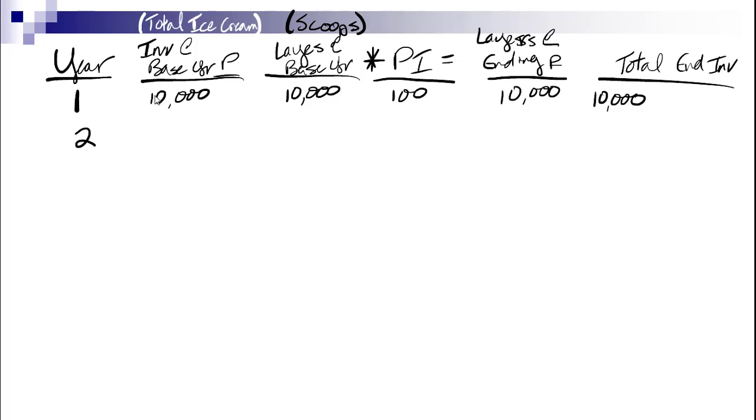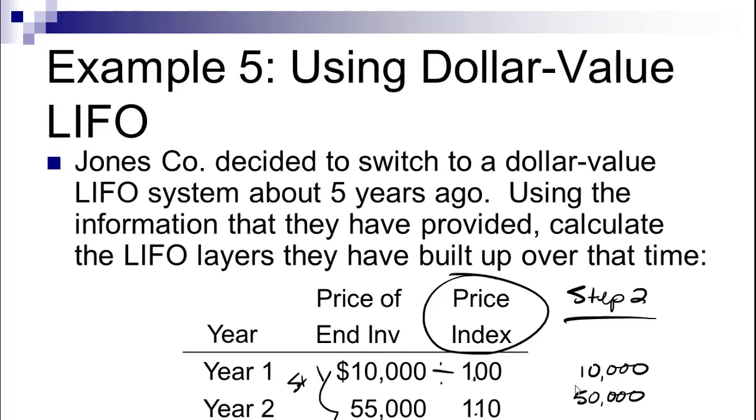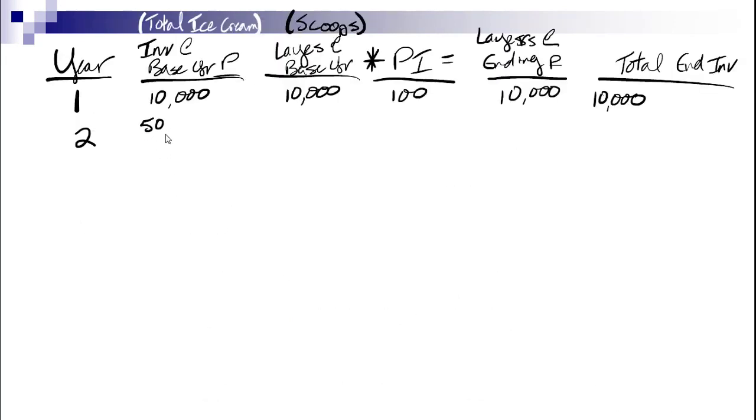Year two now, my inventory at base year or the total ice cream is $50,000. If we think about our ice cream, I have a $10,000 scoop and now if my total is $50,000 and I have a $10,000 scoop, then this scoop must be $40,000. My price index for the year is 1.1, so 40,000 times 1.1 is 44,000. So now I have two scoops of ice cream. It cost me $10,000 to buy the first scoop and 44,000 to buy the second scoop. My total inventory value at the end of year two is $54,000. That's how dollar value LIFO works.